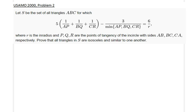Hello everyone, in this lecture we will be going over USAMO 2000 problem number two. We are given that the set S consists of triangles ABC for which a specific equality holds, where r is the inradius and P, Q, R are the points of tangency of the incircle with sides AB, BC, and CA respectively. We would like to prove that all triangles in this set are isosceles and similar to one another.